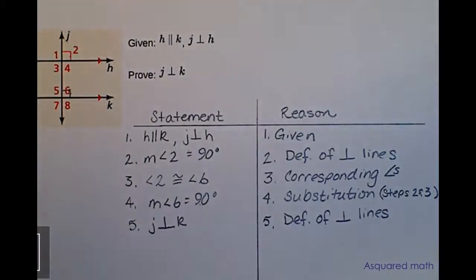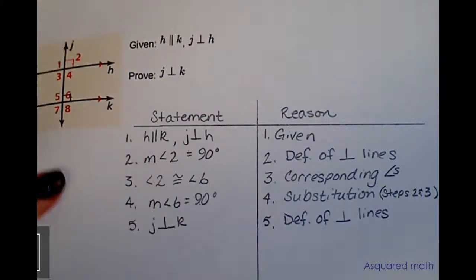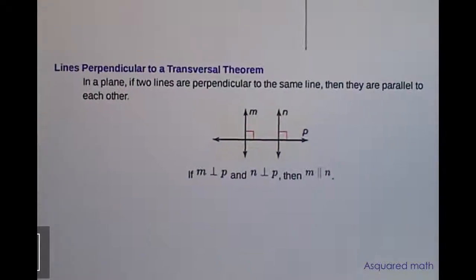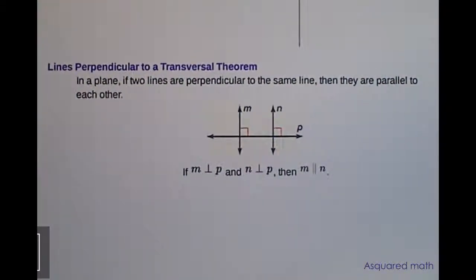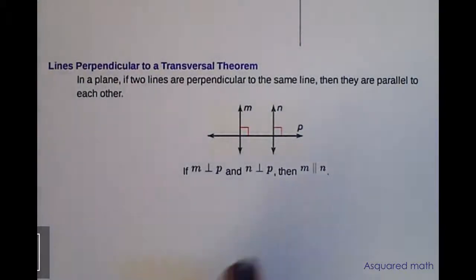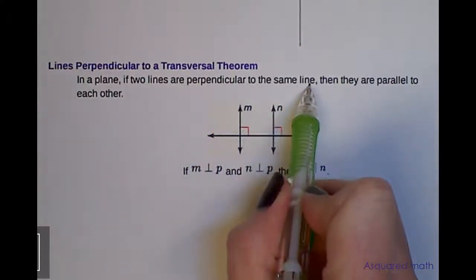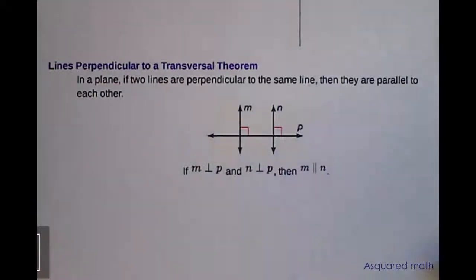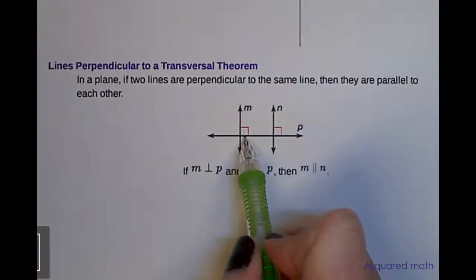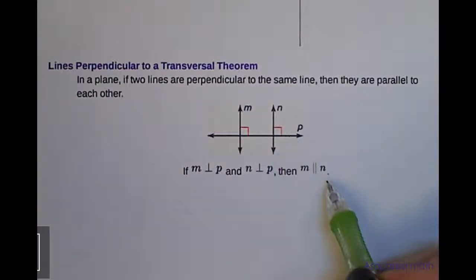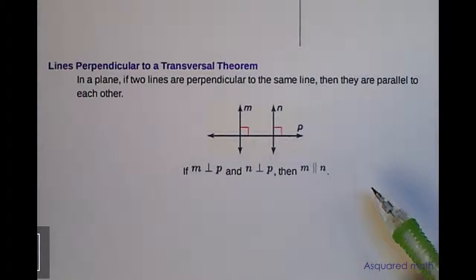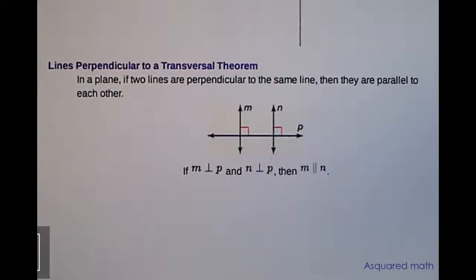The last thing in this section is the lines perpendicular to a transversal theorem, which rotates and flips things from the previous theorem. In a plane, if two lines are perpendicular to the same line, then they are parallel to each other. So if M is perpendicular to P and N is perpendicular to P, then line M and line N are parallel to each other. That concludes today's lesson on proofs with perpendicular lines — talk to you soon!